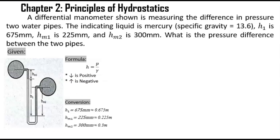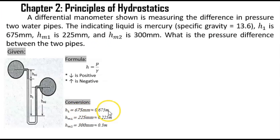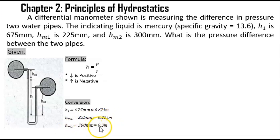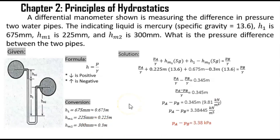Before we proceed with the solution, since our given values are in millimeters, we should convert them to meters. Height 1, equal to 675 millimeters, converts to 0.675 meters. Height m1 converts to 0.225 meters. Height m2 converts to 0.3 meters.